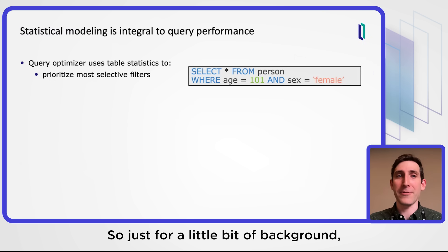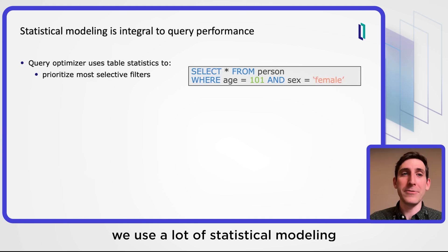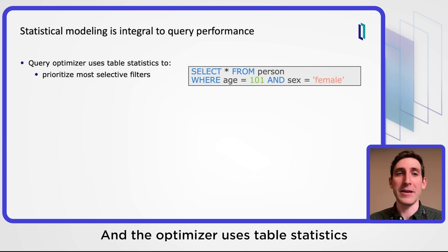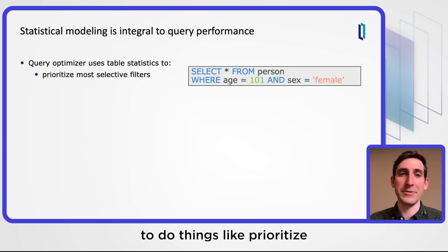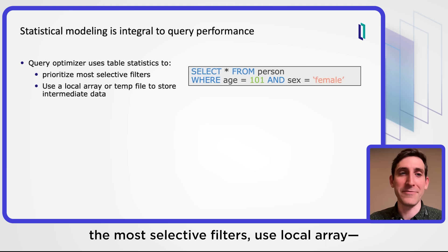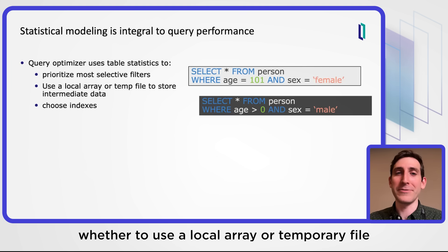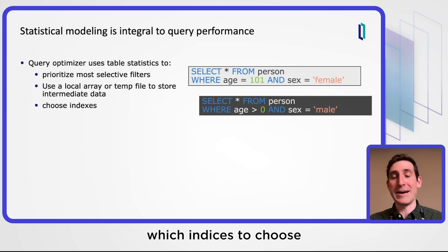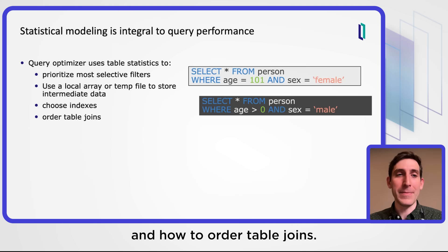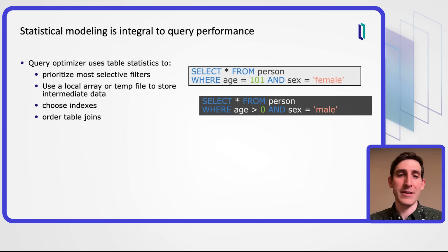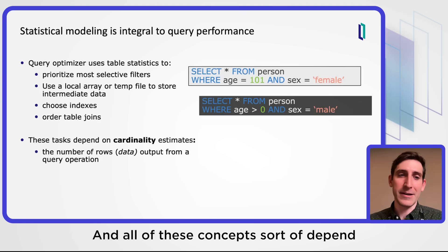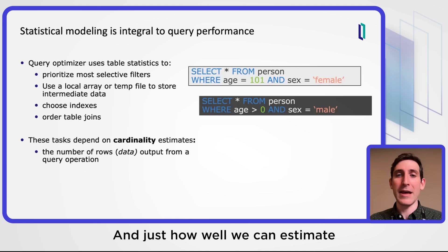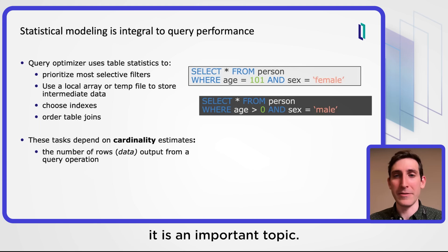Just for a little bit of background, we use a lot of statistical modeling when we're trying to improve query performance, and the optimizer uses table statistics to do things like prioritize the most selected filters, whether to use a local array or temporary file to store intermediate data, which indices to choose, and how to order table joins. All of these concepts depend on this quantity called the cardinality, and how well we can estimate it is an important topic.